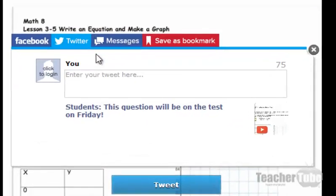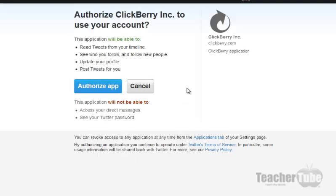So in this moment, I told them that this question will be on the test on Friday. So what I'll do is I'm going to tweet it out. Now what you'll get is a login, and so you'll have to authorize this app. ClickBerry is one of our partners, and so they helped design this process and this annotation for what we wanted for educators.